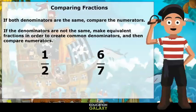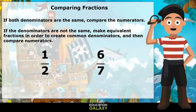Next, let's compare fractions. If both denominators are the same, compare the numerators. If the denominators are not the same, make equivalent fractions in order to create common denominators, and then compare numerators. We need common denominators, so let's think.